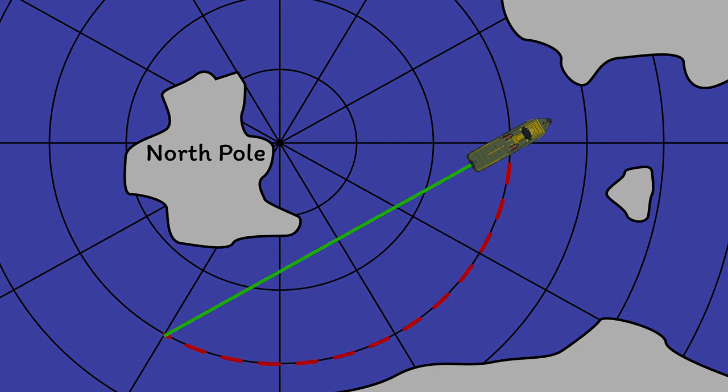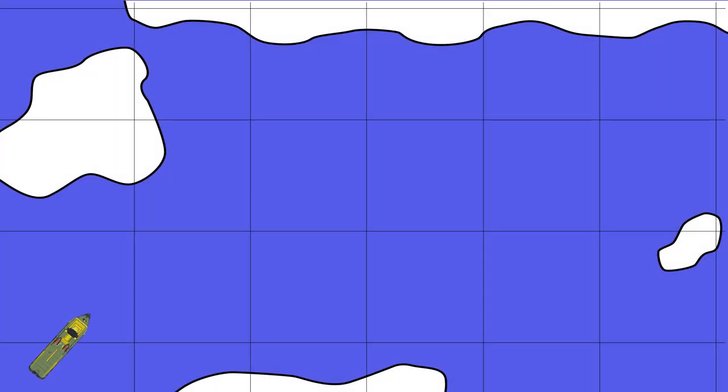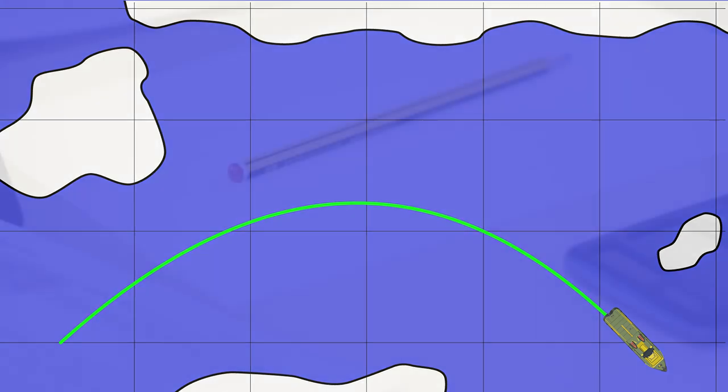Plotting on the Mercator projection is obviously different. To plot the great circle track, you know that you cross each parallel of longitude at a different angle. The track now appears curved, which explains why I've always drawn ocean passages as curved lines.